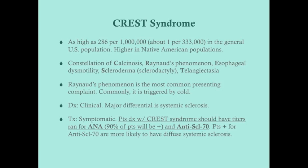With anti-SCL 70, most patients with limited systemic sclerosis (CREST) will be anti-SCL 70 negative. If a patient tentatively diagnosed with CREST comes back positive for anti-SCL 70, they're more likely to actually have diffuse systemic sclerosis and may not yet show systemic signs. You want titers for both ANA and anti-SCL 70 to confirm your diagnosis and determine whether the patient might have the diffuse form.